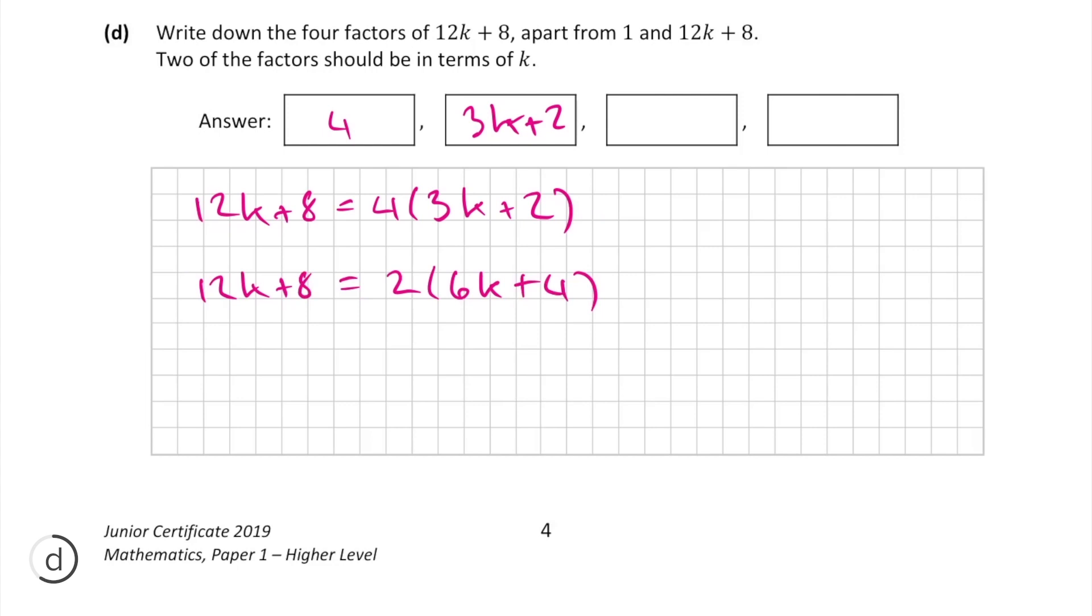Similarly, this can be written as 2 times 6k plus 4. So 2 and 6k plus 4 are also factors.